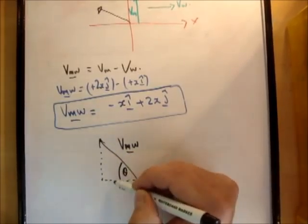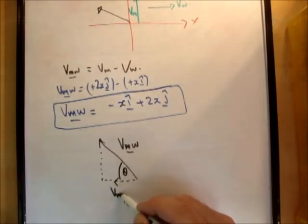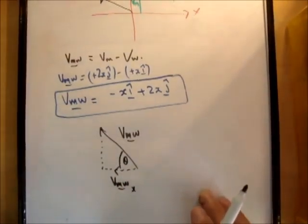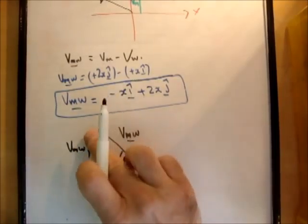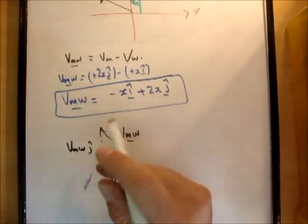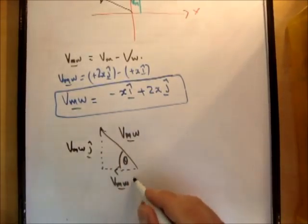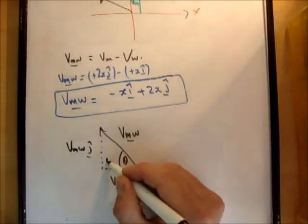We'll call this angle here theta. This is vmw sub x. This is vmw sub y. Or we'll say j-hat and i-hat. Like that. Alright? And these are, of course, at right angles. And they're in those directions.